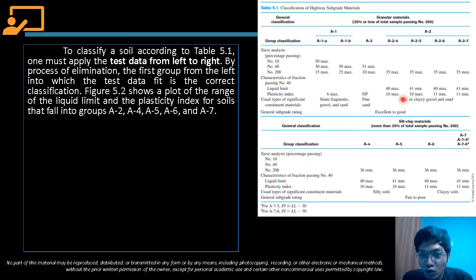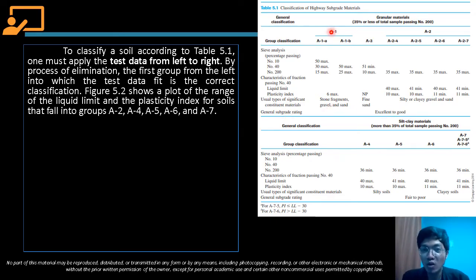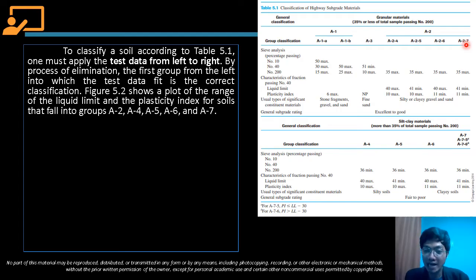The general subgrade rating for granular materials (A1, A2, A3) ranges from excellent to good — from left to right. For silt-clay materials (A4, A5, A6, A7), the rating ranges from fair to poor. This means silty and clay soils are not ideal as highway subgrade materials.